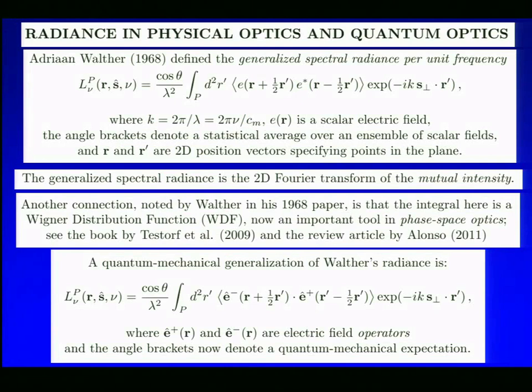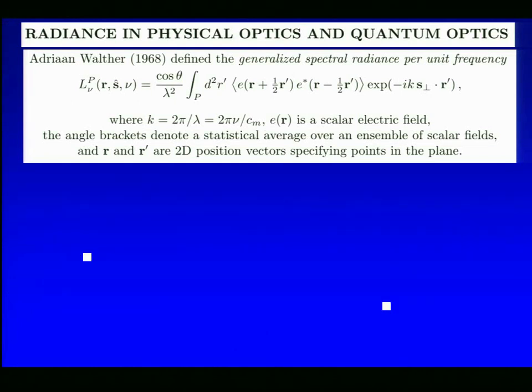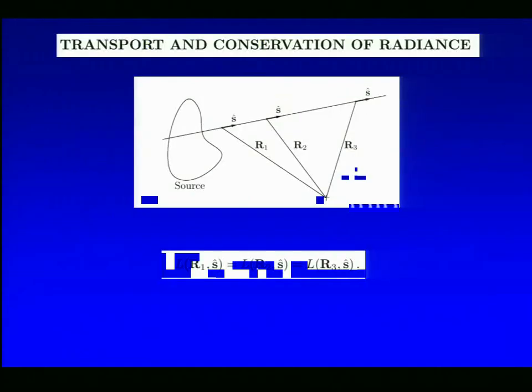Another connection between this expression and Walther's expression is that the integral is a Wigner distribution function, which is something that originated in quantum mechanics but is now a key tool in the field of phase-space optics. Now, look at the expression at the top, and if we modify it ever so slightly, we get a quantum mechanical generalization of Walther's radiance. The modifications are to replace the two scalar fields that appear on the top with two electric field operators, which are standard tools in the quantum optics world, and to reinterpret the angle brackets as a quantum mechanical expectation. So we have a very nice parallel pair of formulas giving the radiance in physical optics and quantum optics.